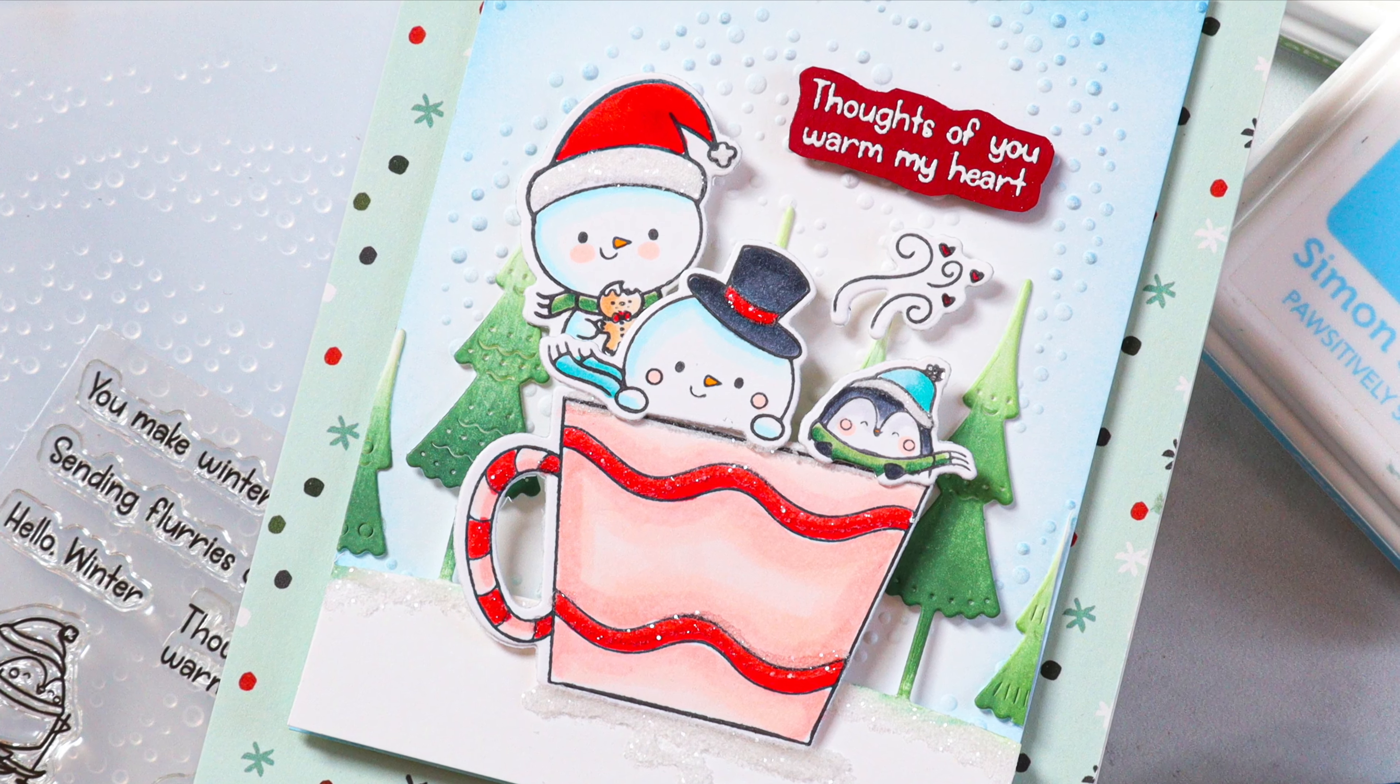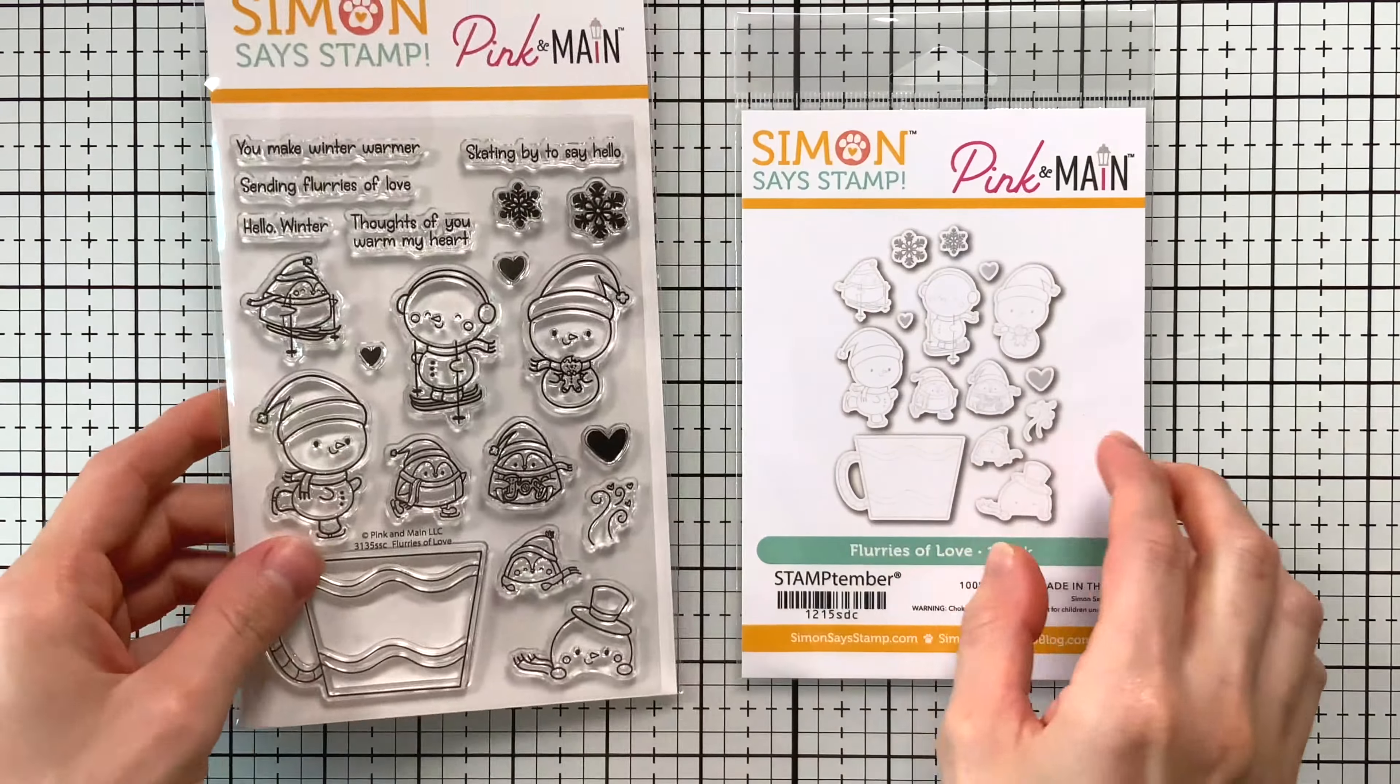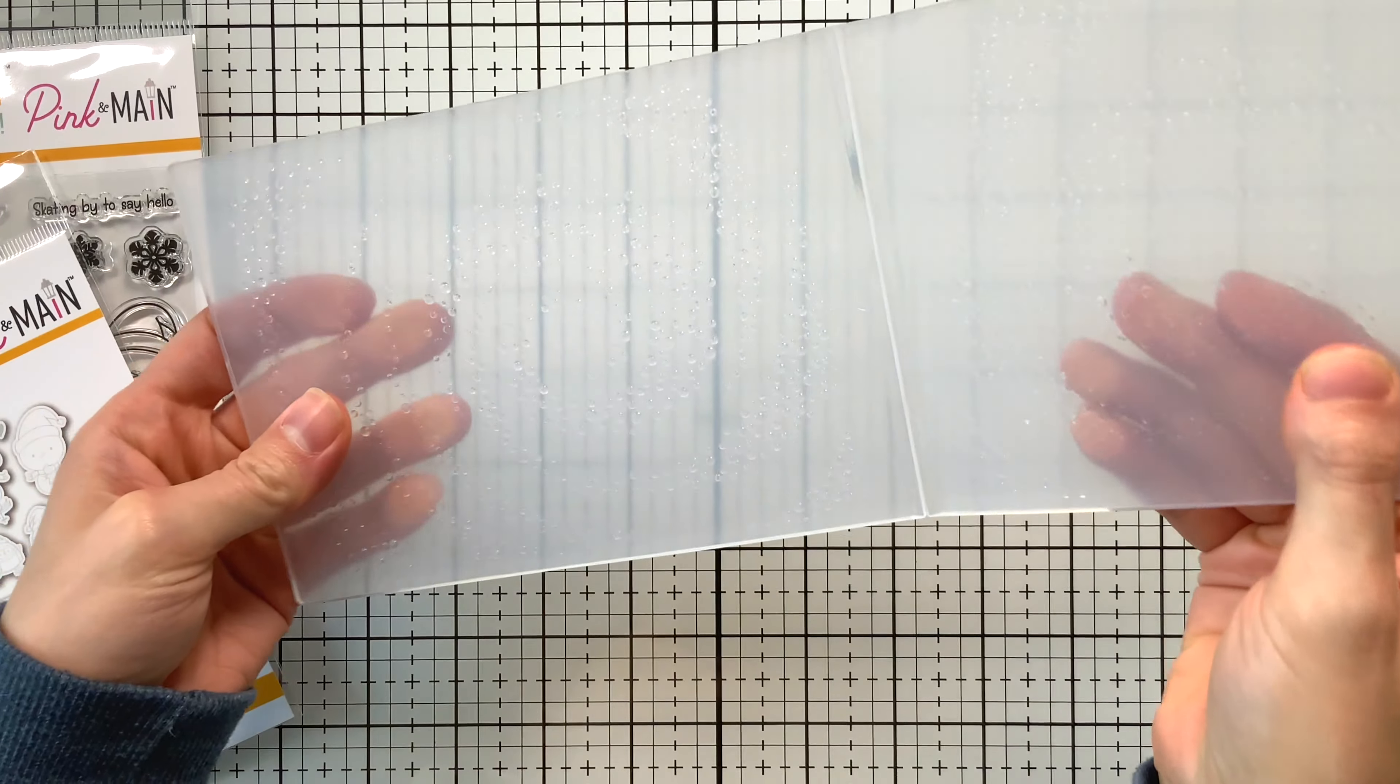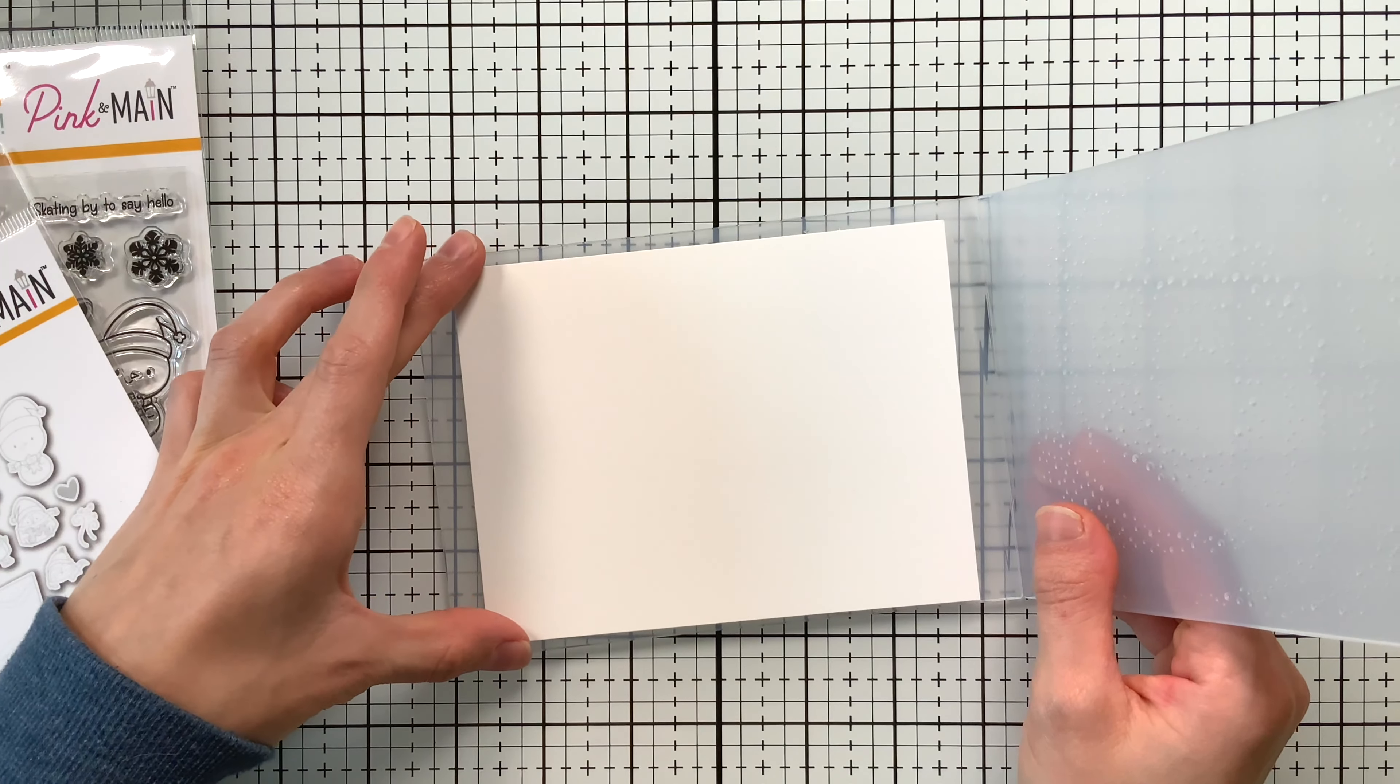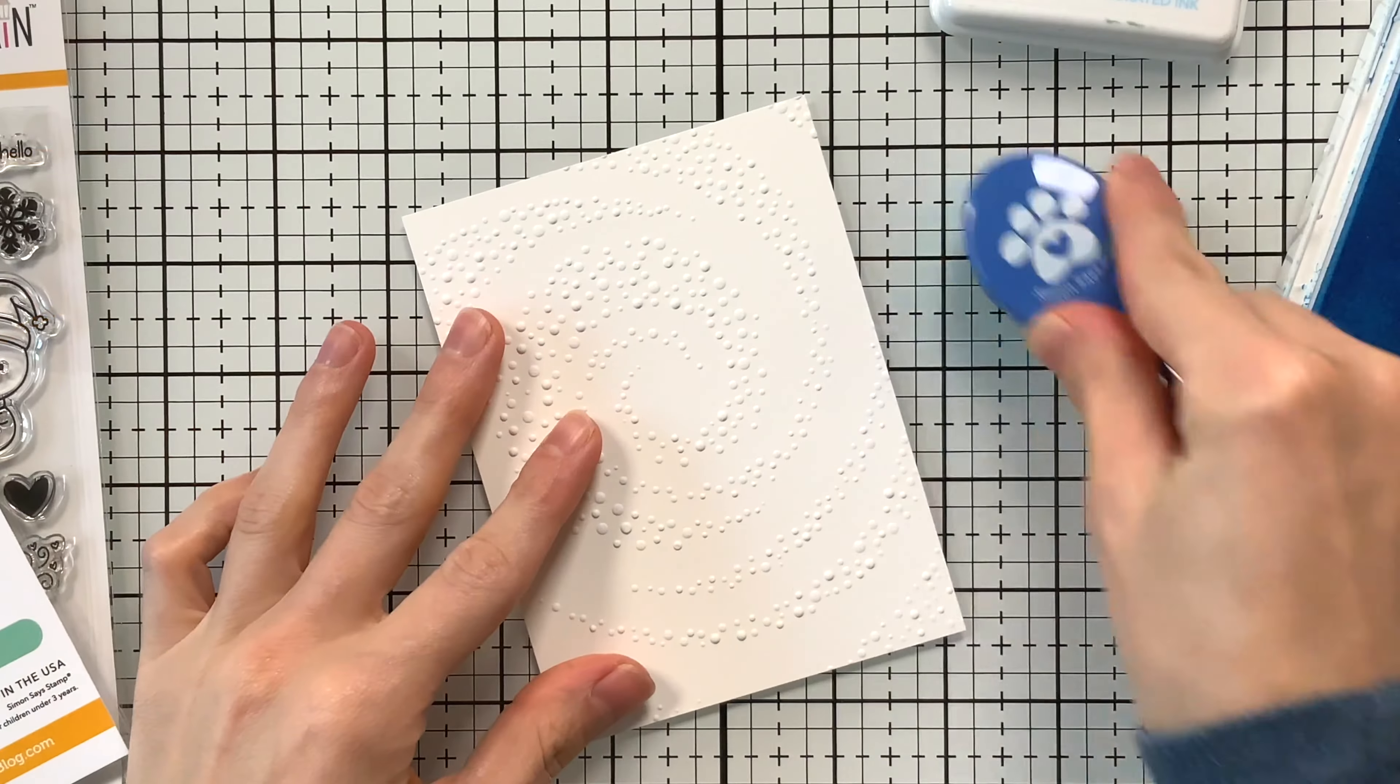This is the stamp set and I'm going to be using it with the coordinating dies. The stamps have some really great greetings in it and lots of different images that you can combine together to create adorable scenes. I'm also using this dotty whirlpool embossing folder from Simon Says Stamp. I love this swirl pattern. I thought it looked like snow flying through the air and thought that would make a really good background behind my characters.